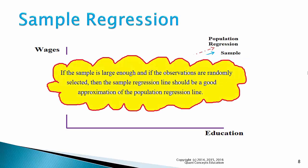If the sample is large enough, and if the observations are randomly selected, then the sample regression line should be a good approximation of the population regression line.